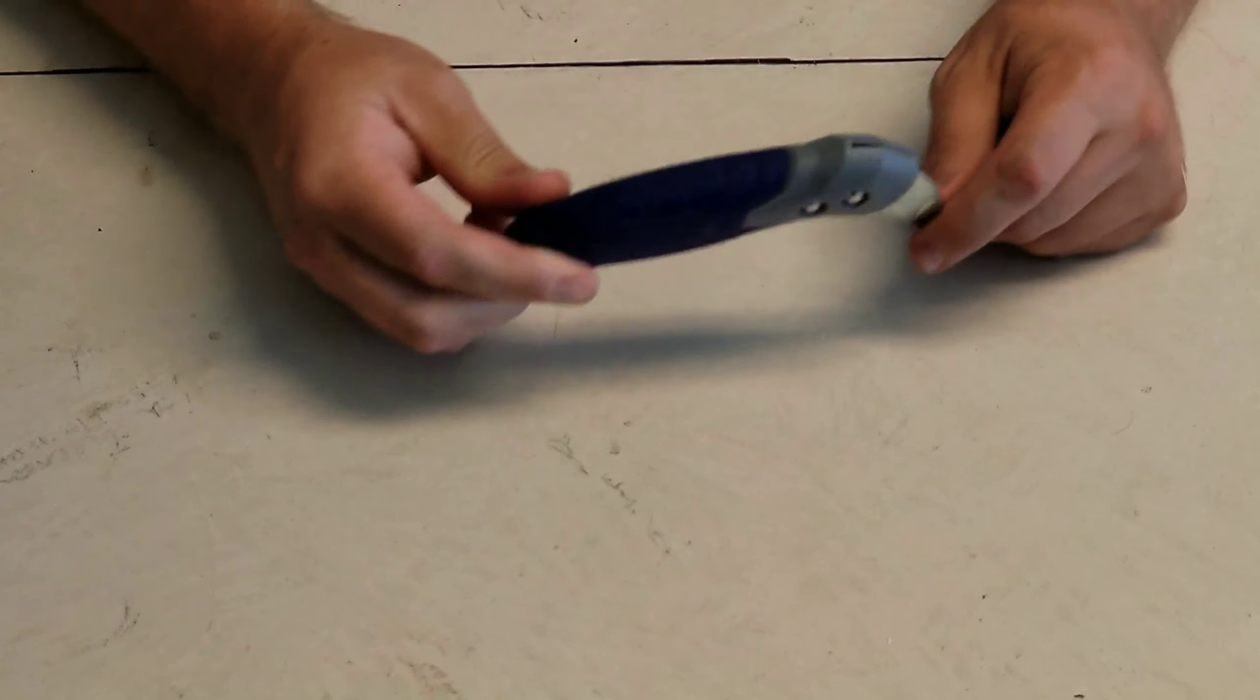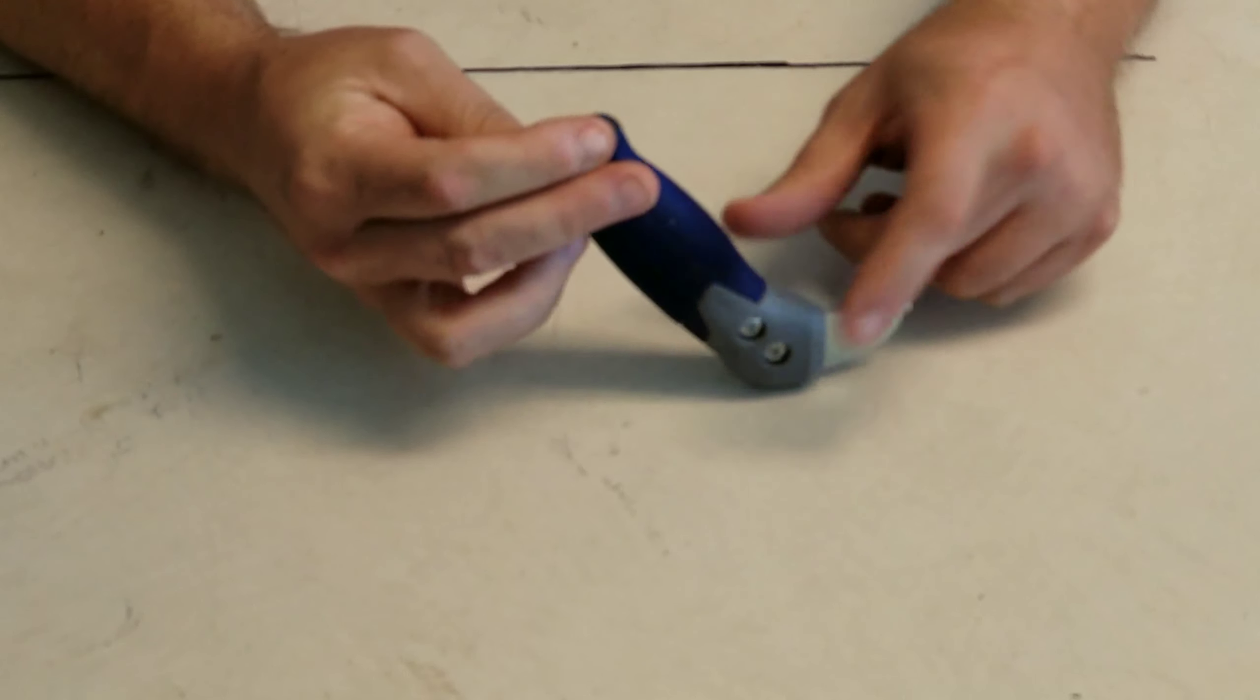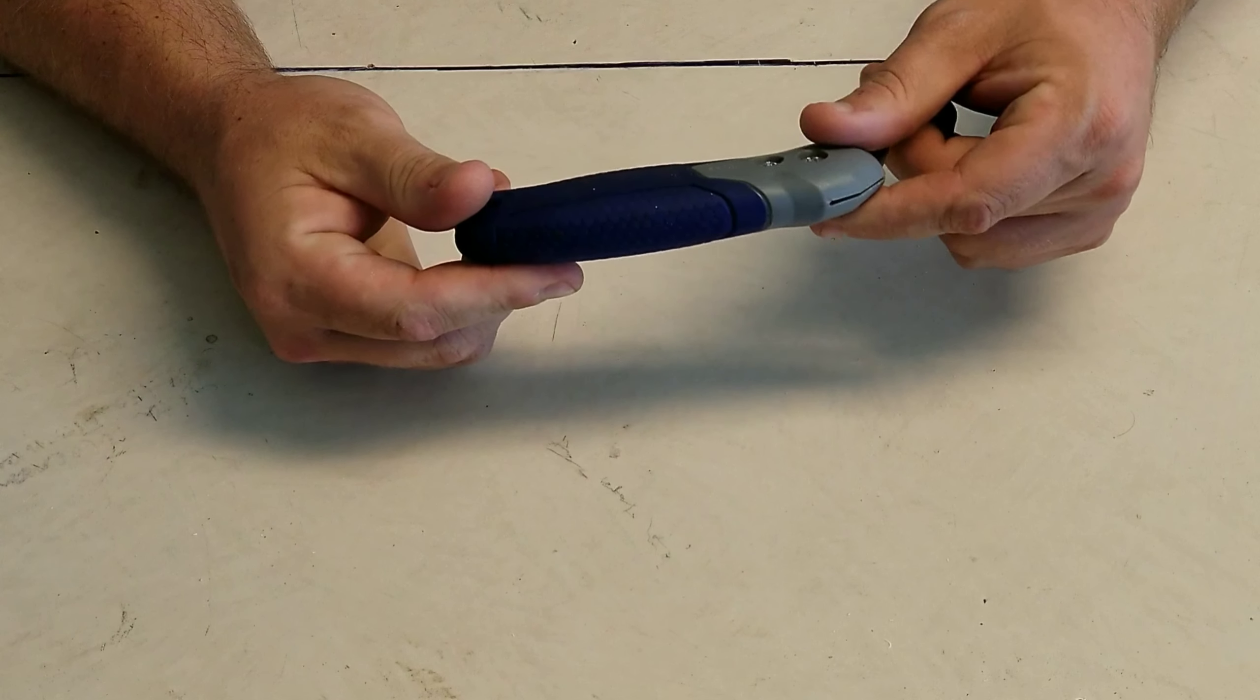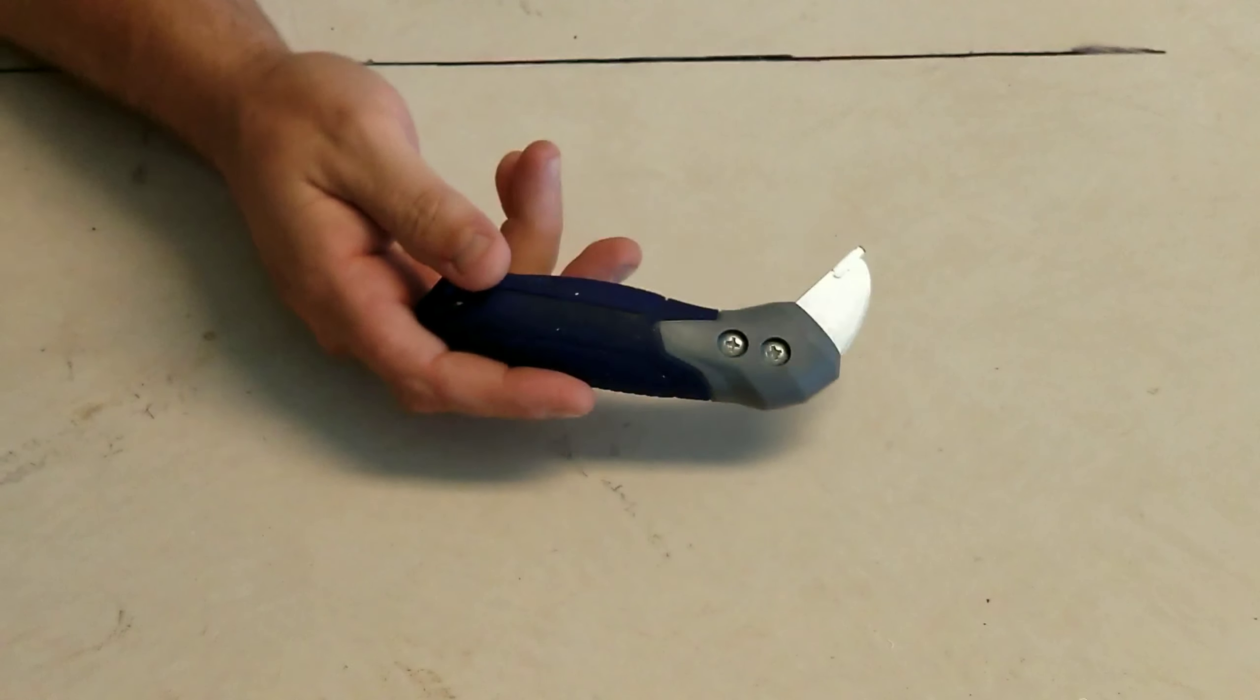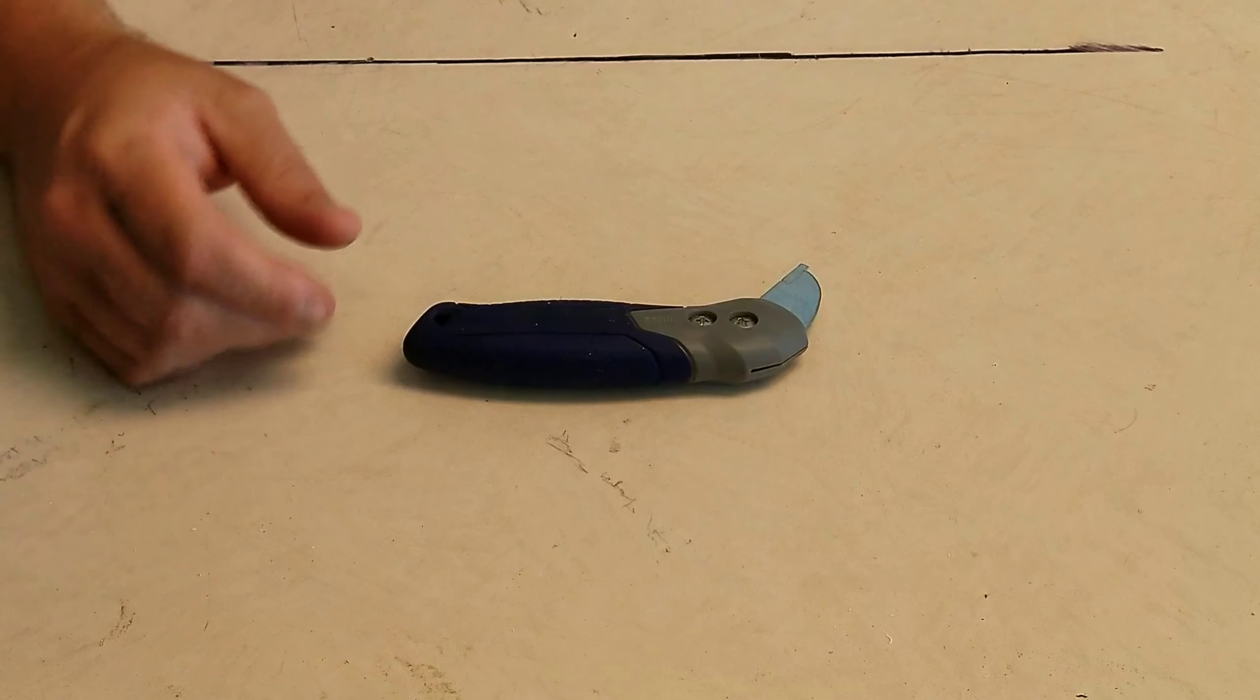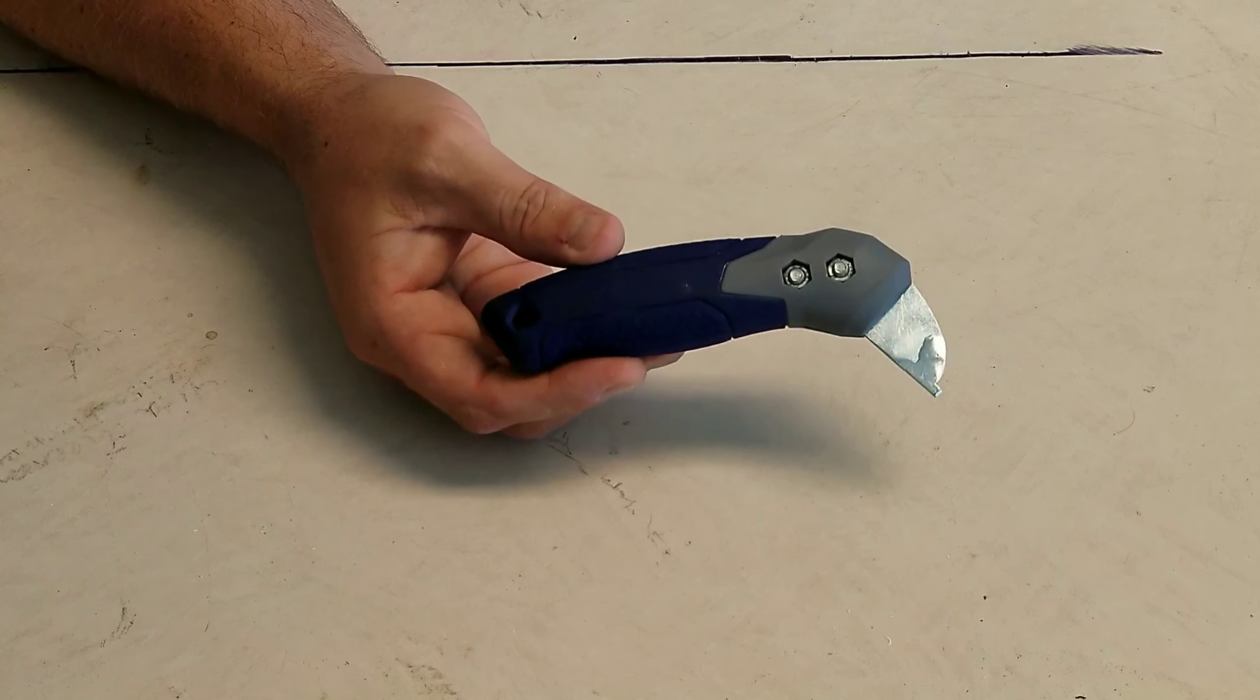All right everybody, this will be a quick short video. I got this at Lowe's. I think it's made by Cobalt. It doesn't have a label or brand on it, but you can tell by the colors. If it isn't Cobalt, then I don't know what it is, but you can buy these at your Lowe's or Home Depot.